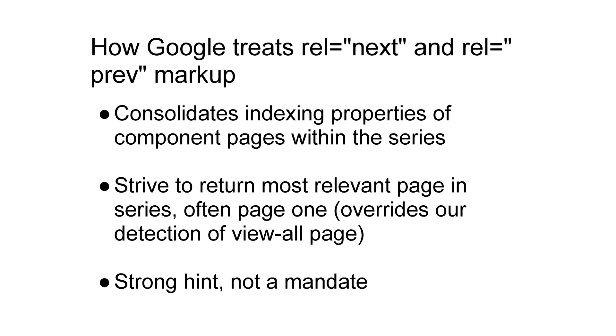Let me explain some ways that rel next and rel prev work. Much like rel canonical, we'll actually consolidate indexing properties from the component pages of the series. In addition, unlike rel canonical that only shows the view-all page in search results, with rel next and rel prev we're going to override that behavior and send users to only one of the component pages — most likely page one, because commonly that's the most relevant page. So if you have that product category selling shapes and you use rel next and rel prev markup, it'll tell us that these two pages belong to one series, and most commonly will send users to page one.